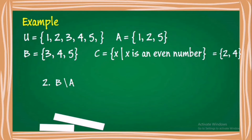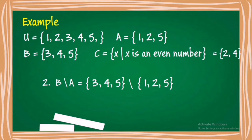Let's find B minus A. B minus A must contain elements of B — which are 3, 4, and 5 — that are not elements of A — which are 1, 2, and 5. So what elements in set B are not elements in set A? The answer is 3 and 4. Therefore, the elements of set B minus A are 3 and 4.